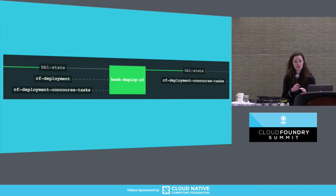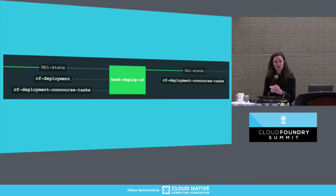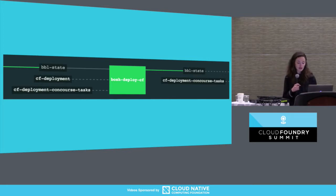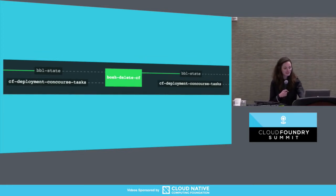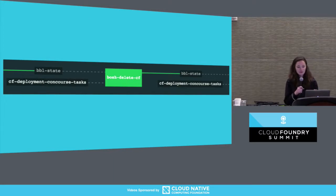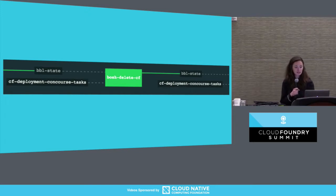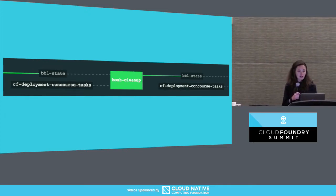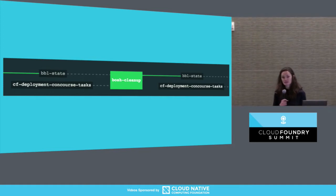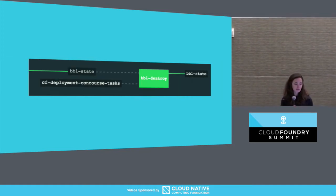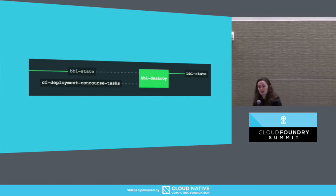In this same pipeline, you can also do the teardown side of things. I do not recommend doing that automatically — I recommend manually triggering it. The first job in the teardown process is to delete the CF Deployment. Then you delete any orphaned stemcells or releases that are no longer in use. And finally, you'll tear down the BOSH director, jumpbox, and IaaS paving in that order.